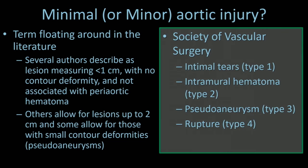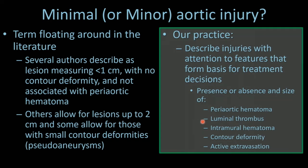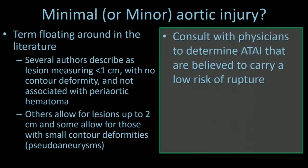The Society of Vascular Surgery classifies aortic injuries. Grade 1 tears only involve the intima. The goal is to treat with endovascular repair or aspirin. Higher-grade injuries, including type 2 intramural hematoma, type 3 pseudoaneurysms, and type 4 ruptures are most often treated with intervention, endovascular if possible, open if not. In our practice, we describe injuries with attention to features that form the basis for treatment decisions: periaortic hematoma, luminal thrombus, intramural hematoma, contour deformity, and active extravasation.